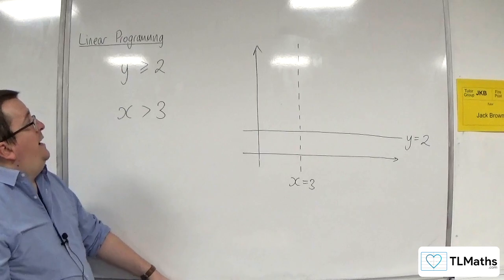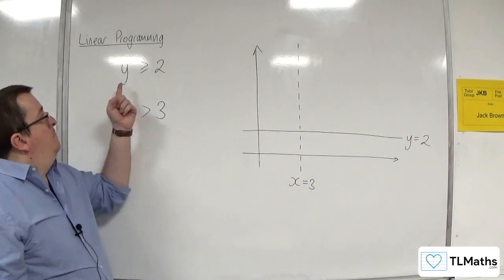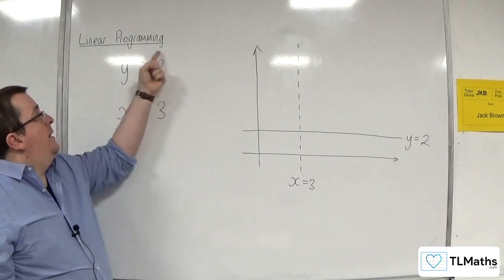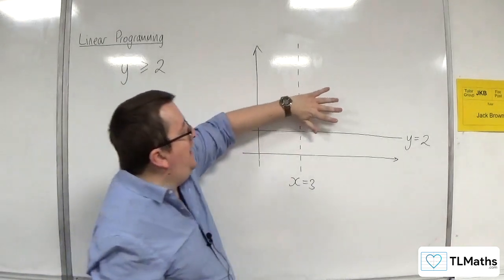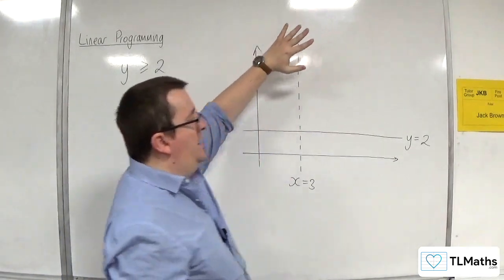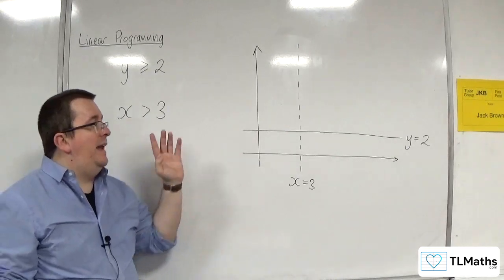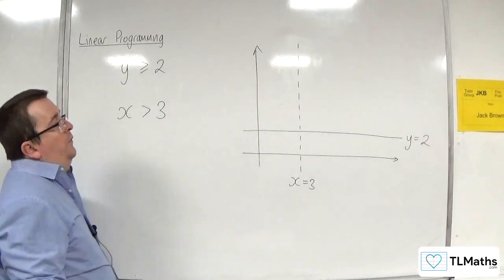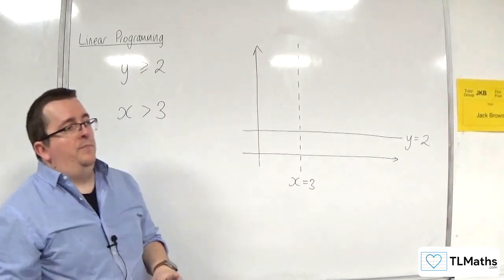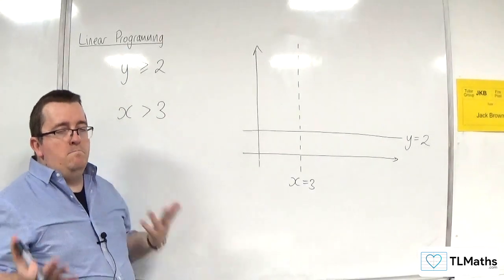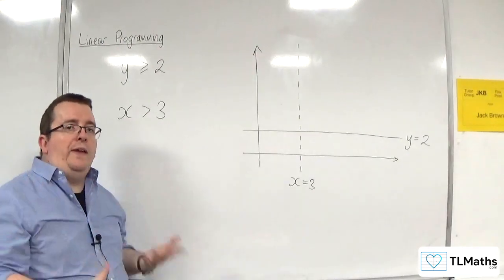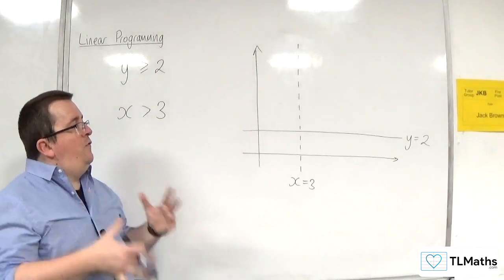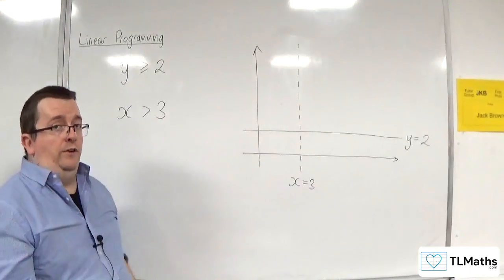So let's leave it with that for the moment. Now, if I'm going to be shading the region, then the region here, y is greater than or equal to 2, is anything above the line 2. And greater than 3 for x is anything to the right of that dashed line. So the problem here is that because we're drawing multiple inequalities on the same graph, if you start shading in the region that you want, the problem is...